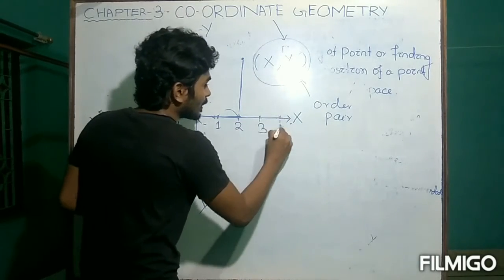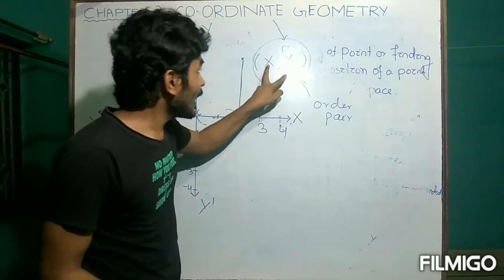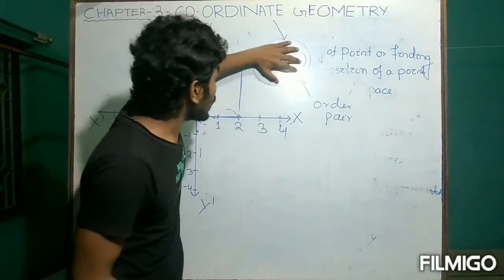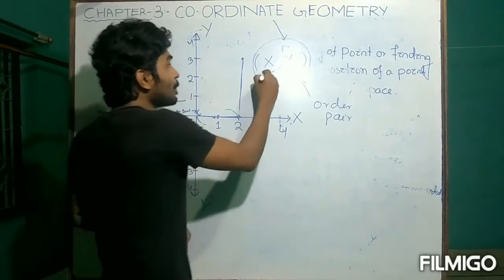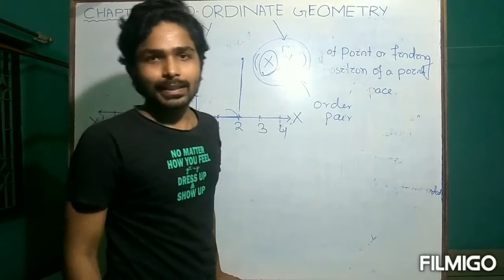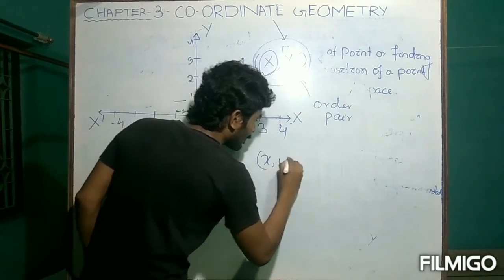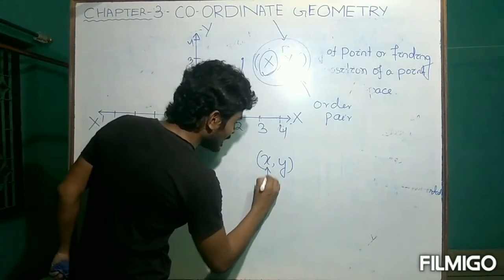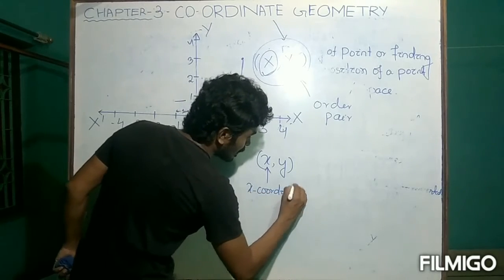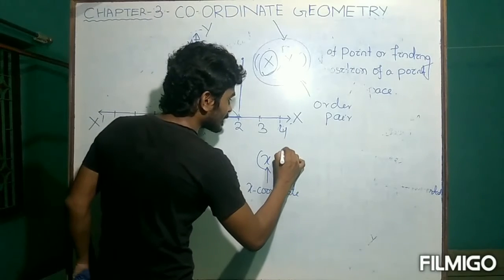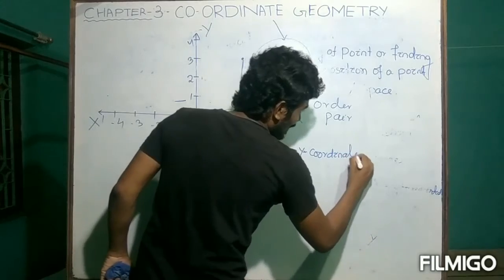Every point on a plane is represented by an ordered pair. In this ordered pair you have two conditions. The first one is known as the x-coordinate, and the second part is known as the y-coordinate.